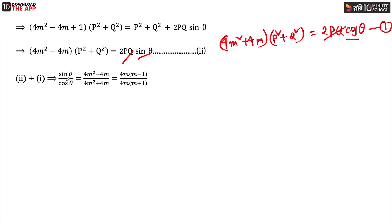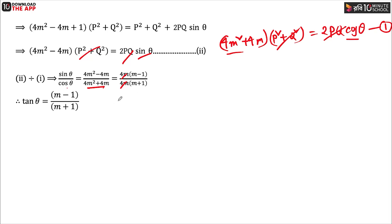We have to give this 4m square plus 4m into p square plus q square equal to 2pq cosine theta. So we have to give this 2pq sine theta divided by cos theta. So p squared plus q squared is equal to 4m minus 4m, and 4m square is equal to 2p squared minus 4m.